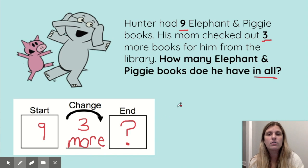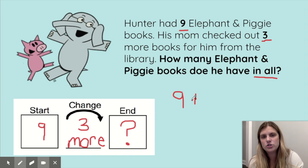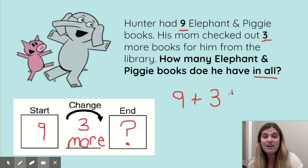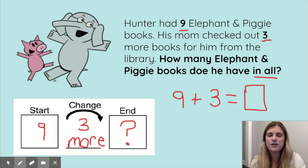I'm going to put a box for the unknown — what I have to solve for. He starts with nine. Since it's a change-to-more, I need to add, so I'm going to put a plus sign. How many more am I adding? Three more. And then I need to figure out what that equals — what is the sum of nine plus three? So I'm going to put a box to show this is what I'm solving for. The question is asking: how many Elephant and Piggy books does he have in all?